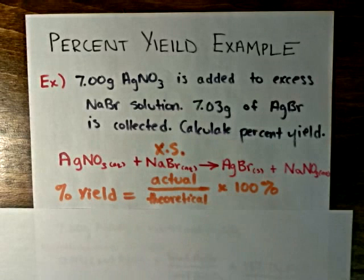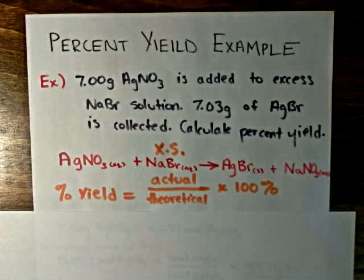And that in itself will simplify this problem quite a bit. Because the sodium bromide is in excess that means that consequently the silver nitrate will be the limiting reagent.